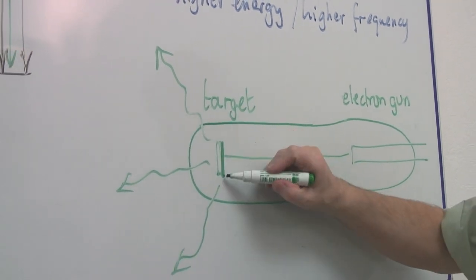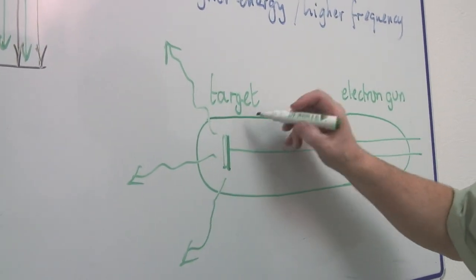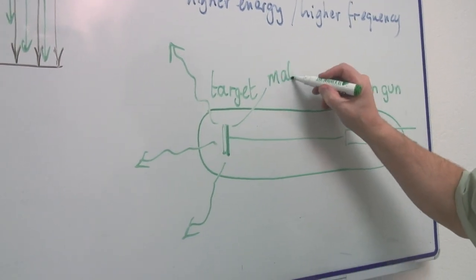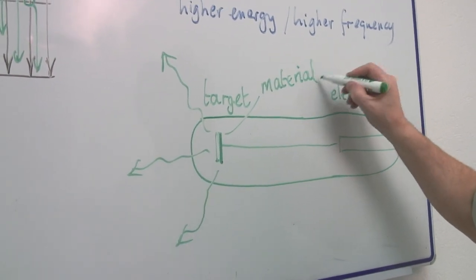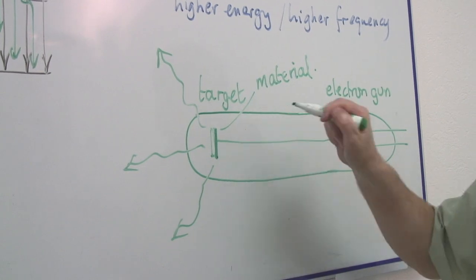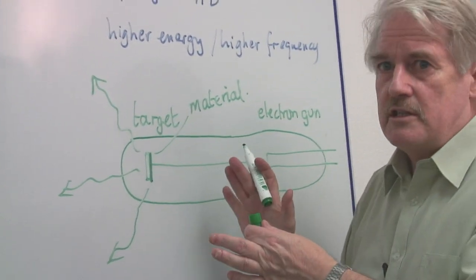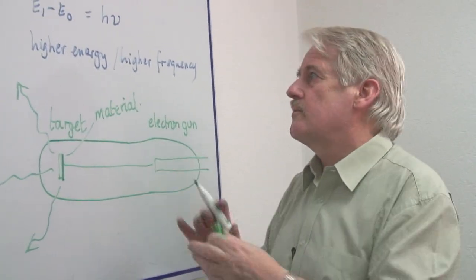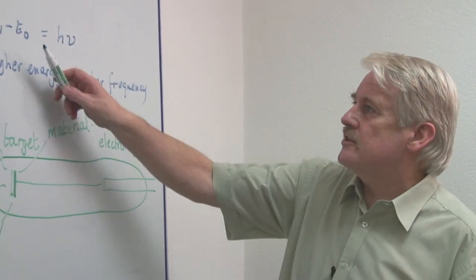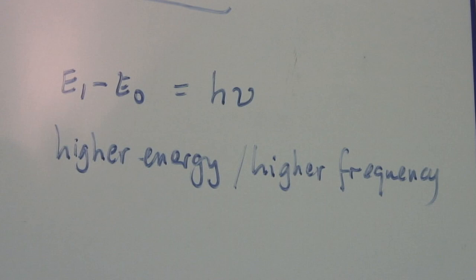And the x-rays are related to the material of the target. The material of the target is what produces the x-rays. And the x-rays are characteristic of that. They produce certain wavelengths. The wavelength depends on the change of energy.